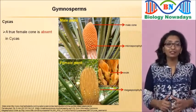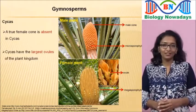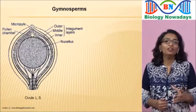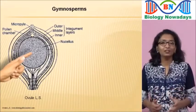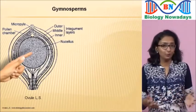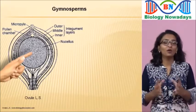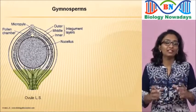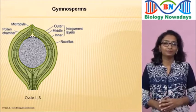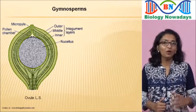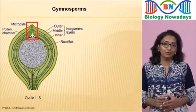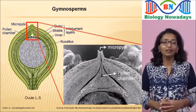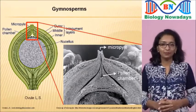Cycas plants have the largest ovules of the plant kingdom. The body of the ovule consisting of many cells is called the nucellus — the central part of the ovule. It is covered with three protective layers called integuments. There is an opening called the micropyle and a small chamber called the pollen chamber.